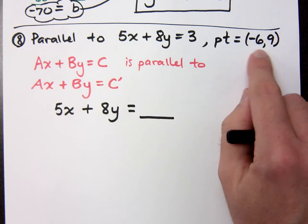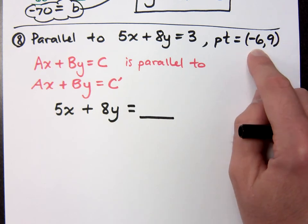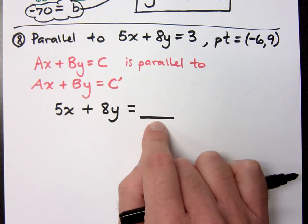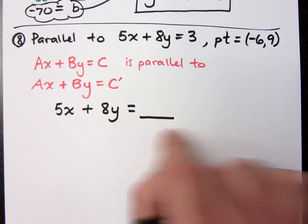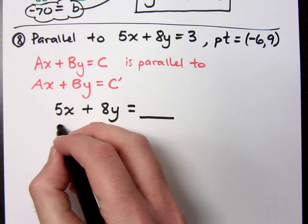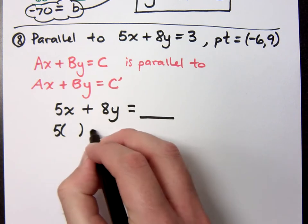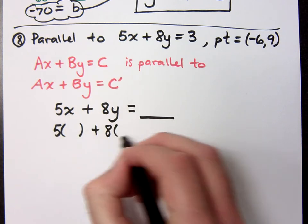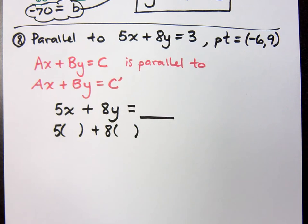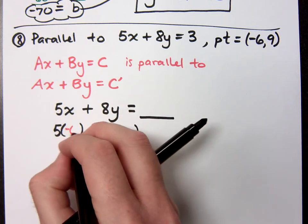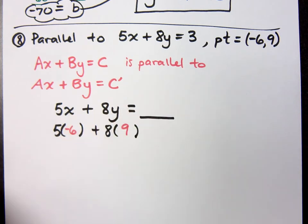Now I'm saying that this point right here is supposed to be a solution for my new equation, for my new line, right? That means I should be able to plug in these values for x and for y, and it's supposed to equal a certain number. So I plug in negative 6 and I plug in 9. What does that give me?